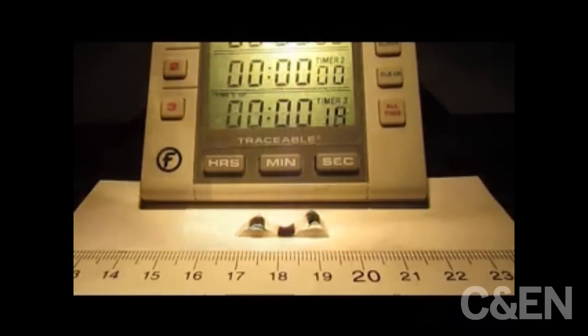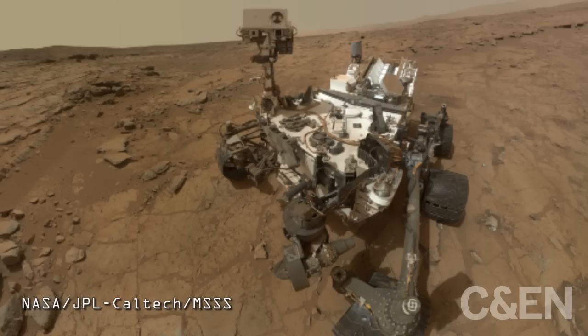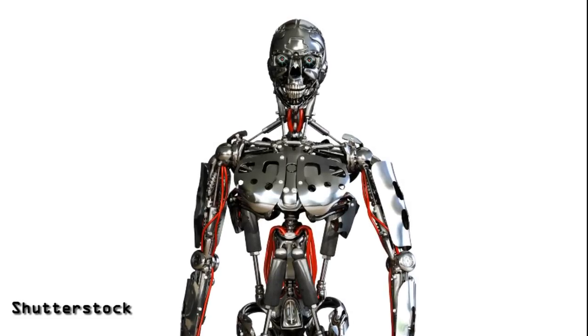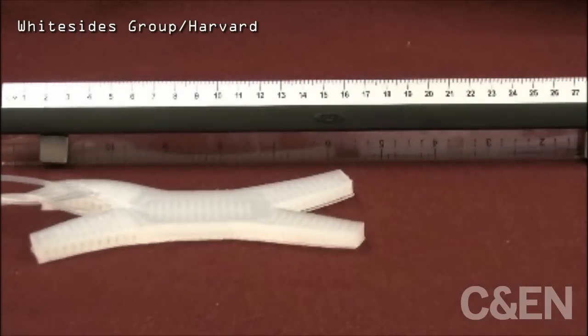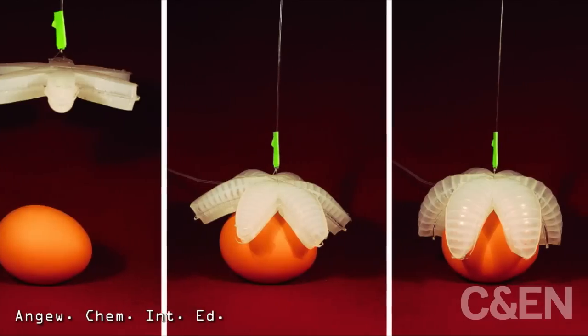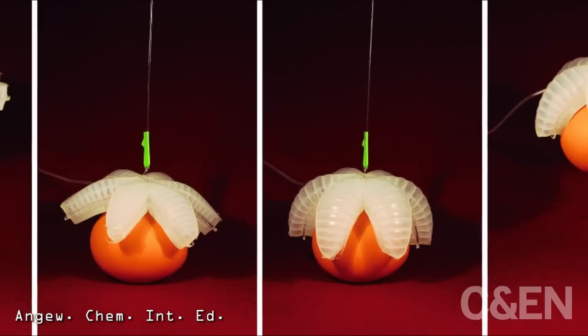At first glance, this flexible doohickey might not seem like it has anything to do with robots. After all, robots we see on TV and in movies typically have hard frames and metal parts. But scientists these days want to make robots out of softer materials, ones that are more flexible and can carry fragile objects without breaking them.